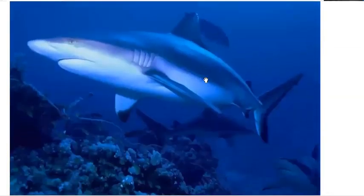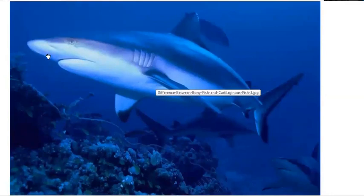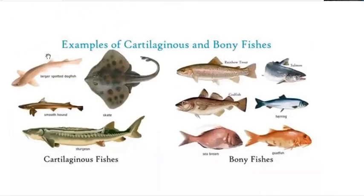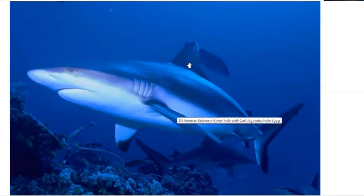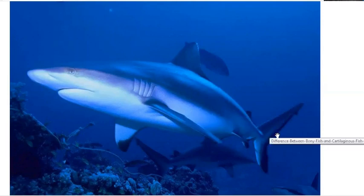Looking at the main differences using a diagram: in sharks, the mouth is ventral — located on the underside. The gill slits are exposed and not covered by an operculum. The fins include pectoral fins, dorsal fins, anal fins, and pelvic fins.